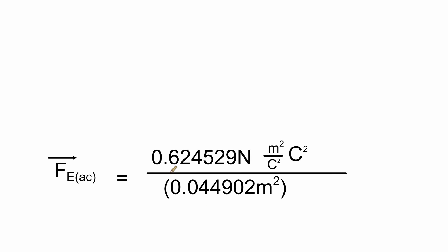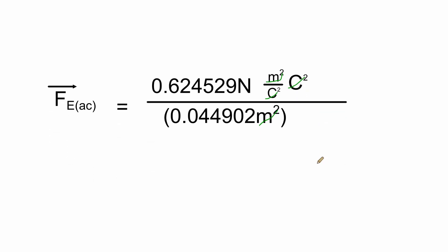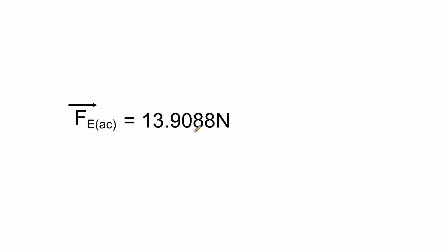Multiplying the top and squaring the bottom: on the top we get 0.624529 newtons meter squared per Coulomb squared times Coulomb squared, and on the bottom squaring the distance gives 0.044902. The meter squared and Coulomb squared cancel out, leaving newtons. Dividing top by bottom, we end up getting 13.9088 newtons, and the direction for that one will be towards the left.